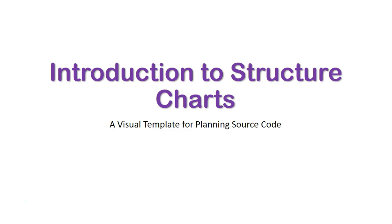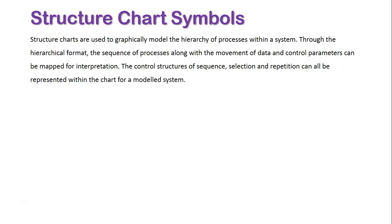We're now going to take a look at structure charts being used as a visual template for planning source code. A structure chart is used to graphically model the hierarchy of processes within a system. Through the hierarchical format, the sequence of processes along with the movement of data and control parameters can be mapped for interpretation. The control structures of sequence, selection, and repetition can all be represented within the chart for modeling the system.